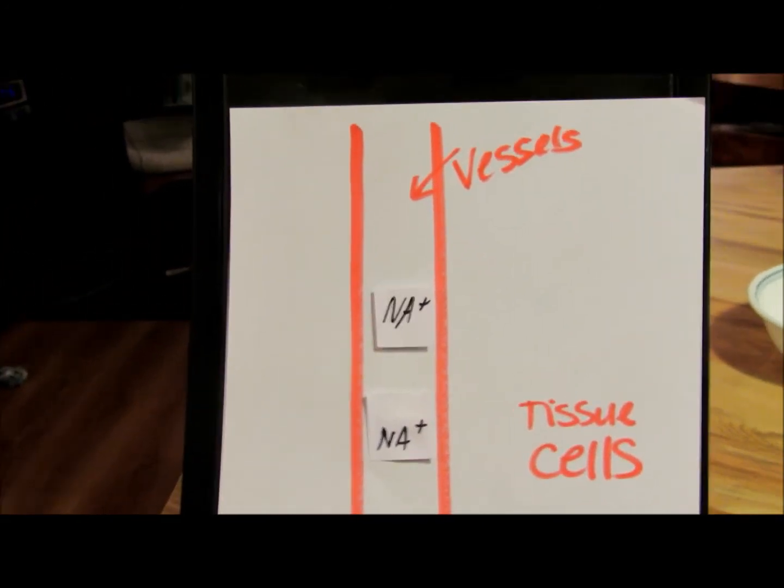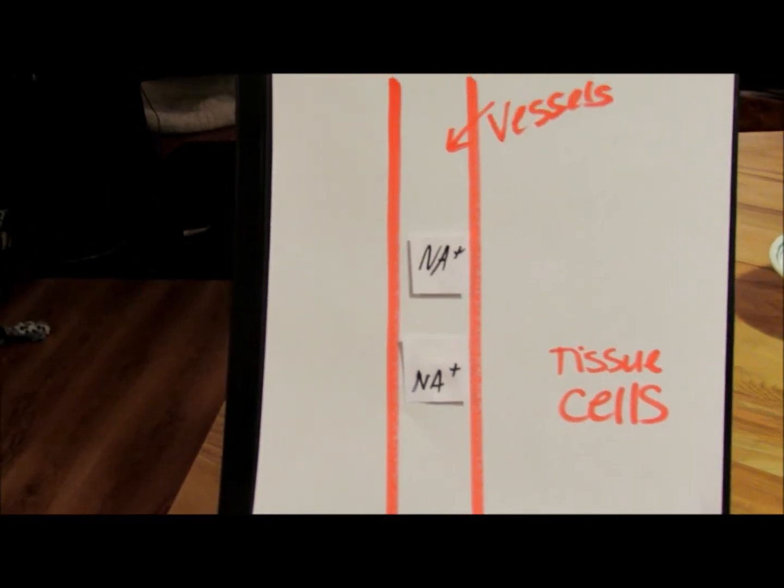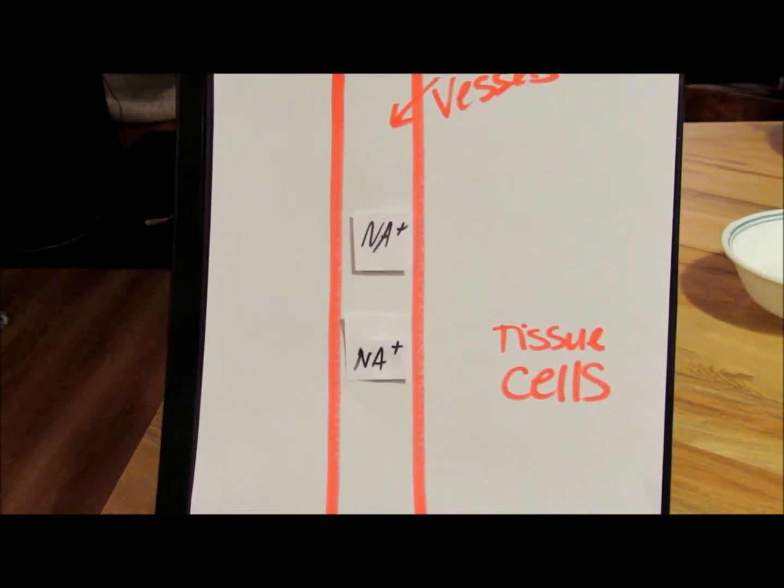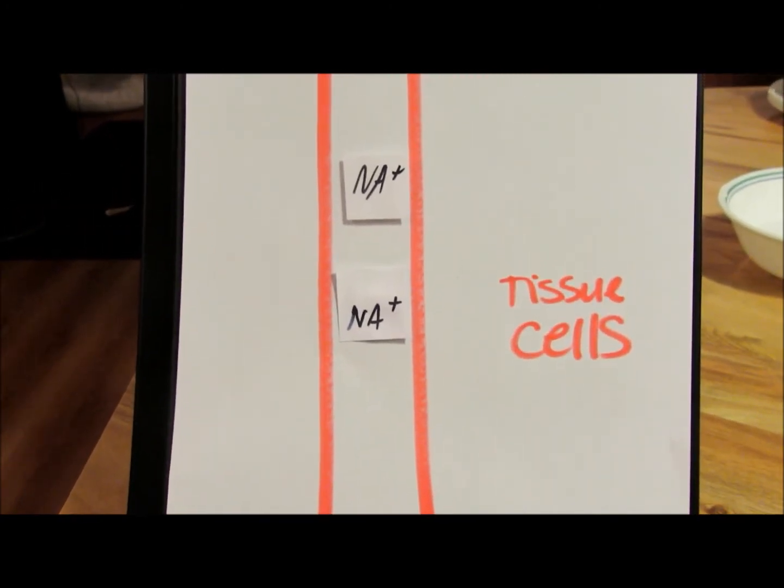Here you go. So here is your blood vessel, that big long stick is your blood vessel, and outside is your tissue and cells. Now for example, if you look here at the vessel, imagine it's just full of water and you see there's only two sodiums.